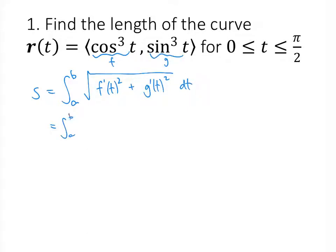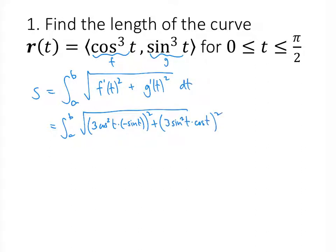Now we just need to work that out. The derivative of cosine cubed of t is 3 cosine squared of t times the derivative of cosine, which is negative sine — then we square that. We add that to the derivative of sine cubed of t, which similarly is 3 times sine squared of t times the derivative of sine, which is cosine — and then we square that.